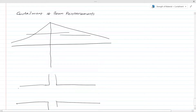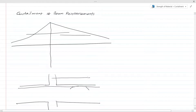Say you have a top bar reinforcement and you want to lap there. This is the lap length, and this is the distance we are going to find. According to the bending moment requirement and reinforcement requirement, this distance we are going to find.